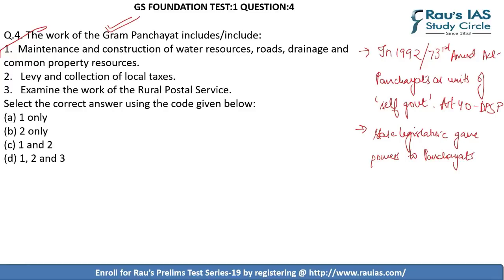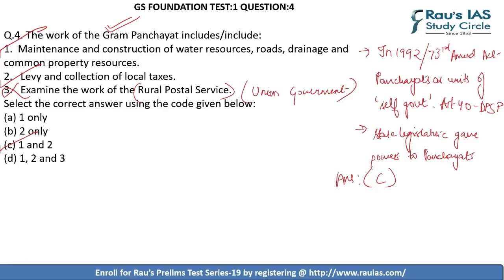The second statement — levying and collection of local taxes comes under the jurisdiction of Gram Panchayat — is also correct. The third statement says rural postal service is under the domain of Gram Panchayat; this is incorrect as it comes under the union government. Therefore the correct option is C, that is statements 1 and 2.